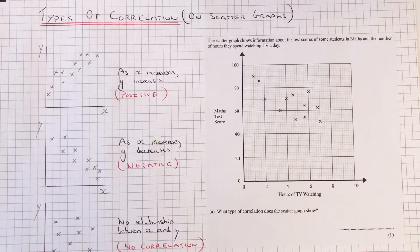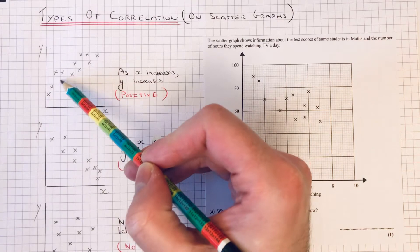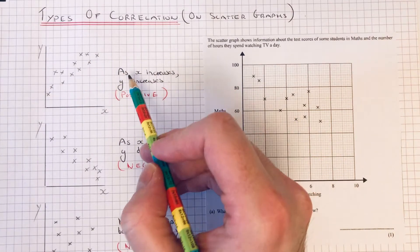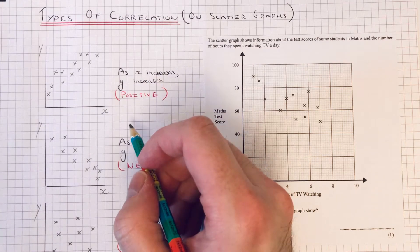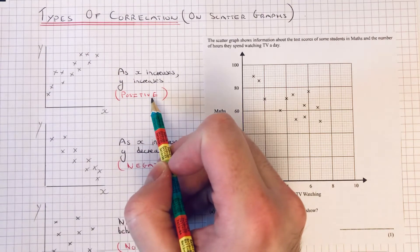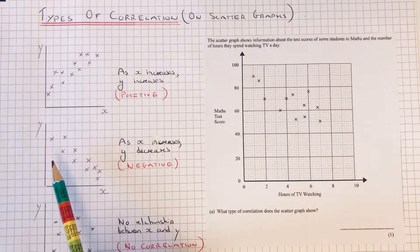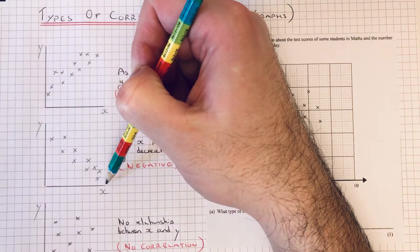On a scatter graph, the first one is if the points are going upwards on our page from left to right. This means as x increases, the y value also increases. If it's like this, it's called a positive correlation.